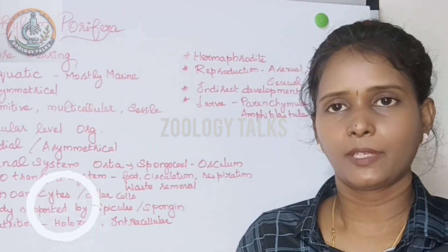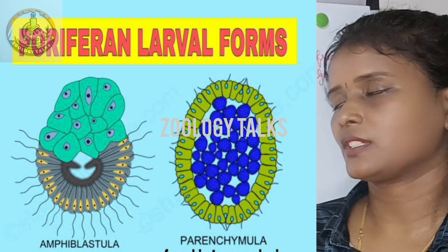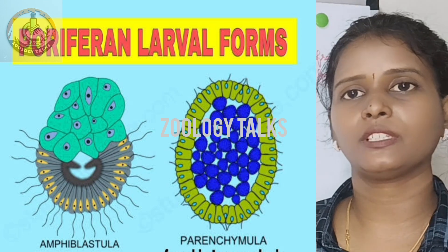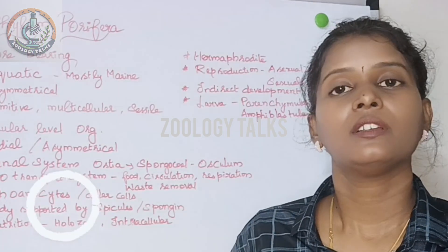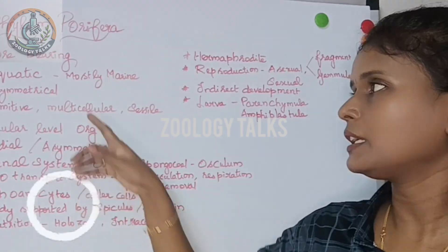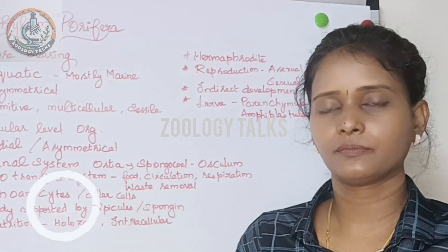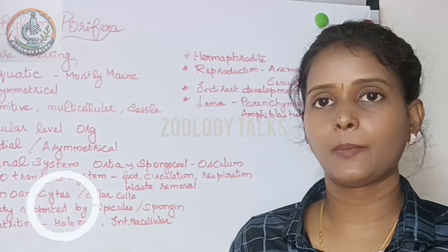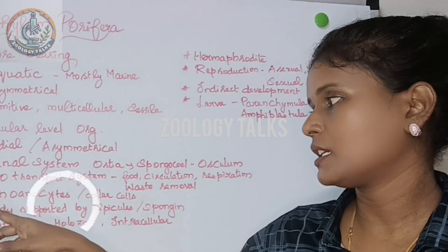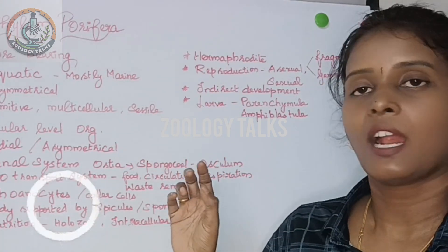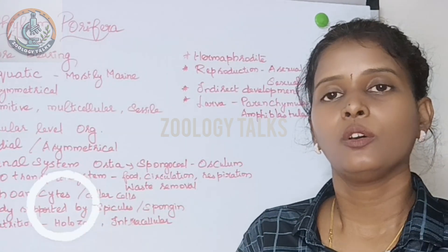There are two different types of larvae in Porifera. One is the Parenchymula larva, which is an important characteristic feature to remember — especially for match-the-column questions. You can learn the general characteristic features of Phylum Porifera and all ten phyla on one page.